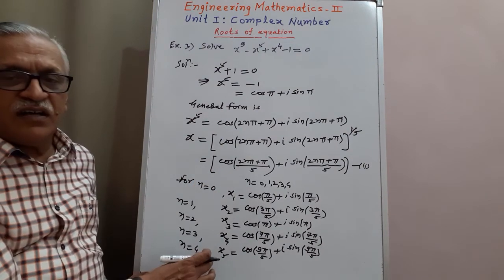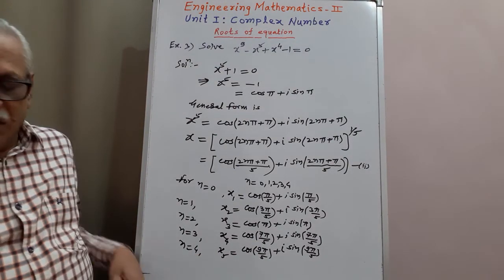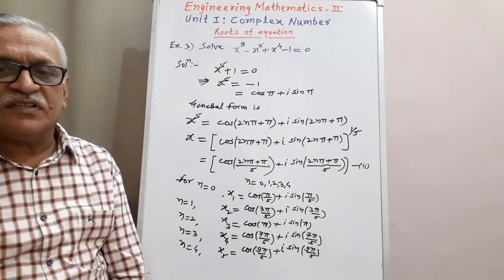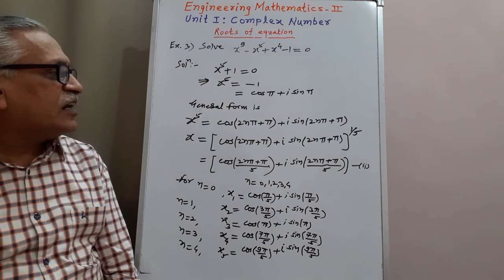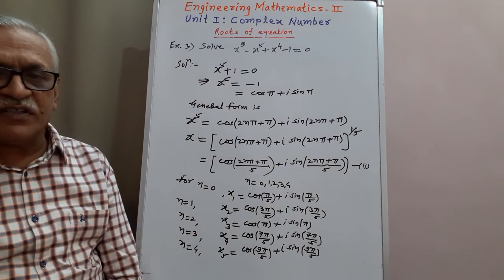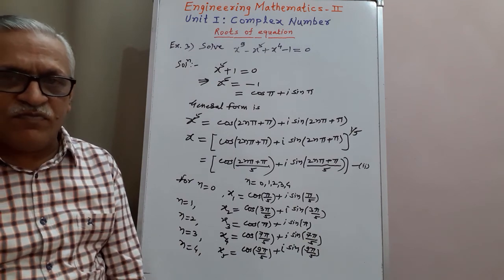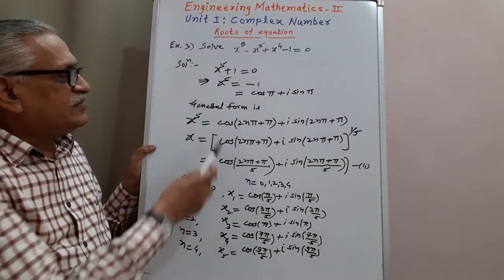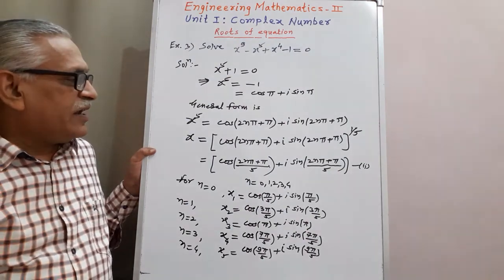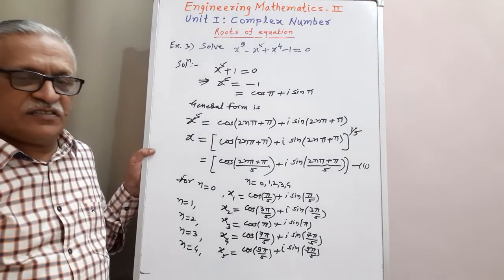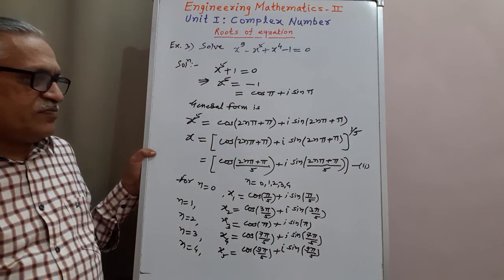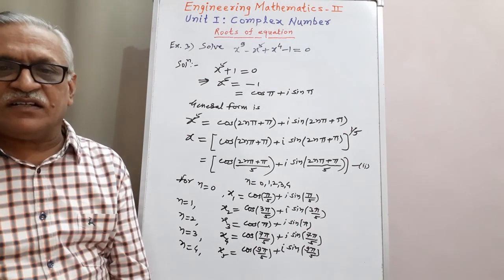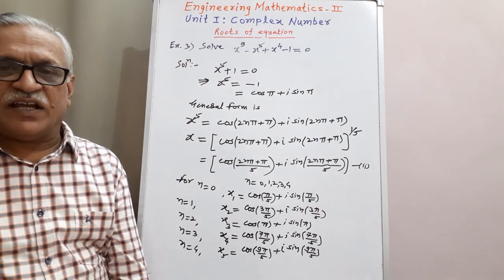Therefore, like this we can find the roots of any equation. In short, the steps are: first, convert the number into polar form; then convert it into its general polar form; then take the required root (cube root, fifth root, fourth root, etc.); and then substitute n equal to 0, 1, 2, 3 to obtain the required roots. If you are watching my videos, please like and share, and subscribe to my channel for new videos. Thank you very much.